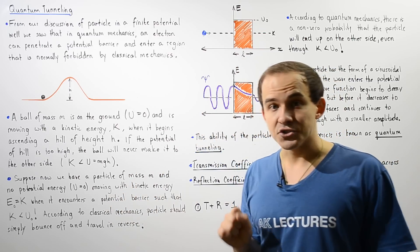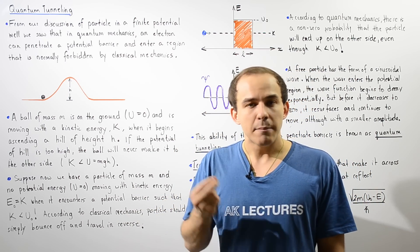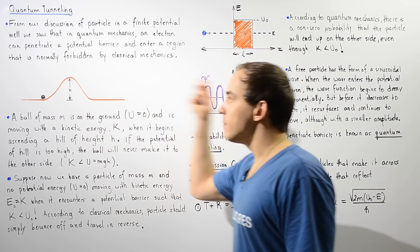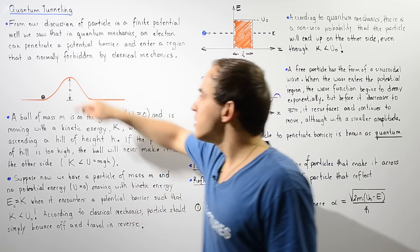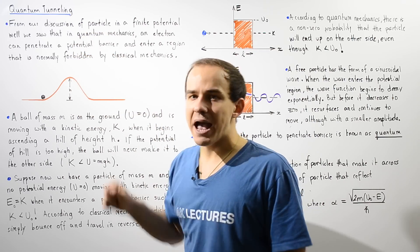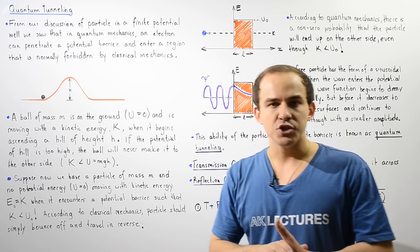In quantum mechanics, what this actually tells us, there is some probability that our object will end up on the other side of the potential barrier even though the potential energy of the barrier is greater than the kinetic energy of that object.